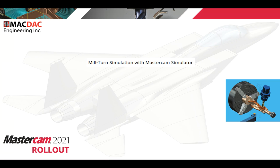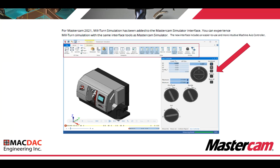Mill Turn simulation with Mastercam Simulator. For Mastercam 2021, Mill Turn simulation has been added to the Mastercam Simulator interface. You can experience Mill Turn simulation with the same interface tools as Mastercam Simulator — so if you're familiar with Mastercam Verify, this should be very intuitive. The new interface includes an easier to use and more intuitive machine access controller, allowing you to switch dials for right spindle and left spindle and jog the turn just like you're at the machine control.